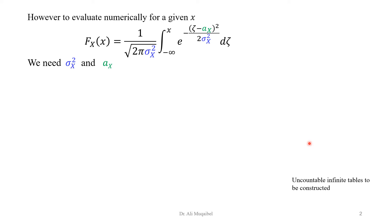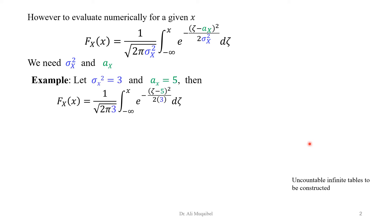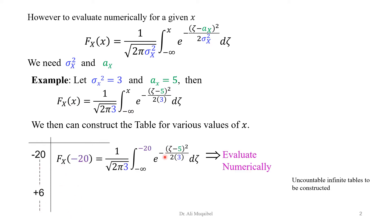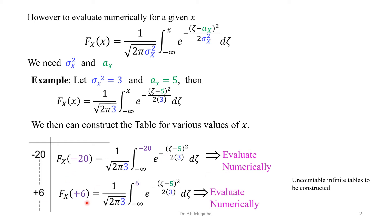To evaluate the CDF numerically for a given X, we need the variance σ_X² and the mean a_X. For example, if σ_X² = 3 and a_X = 5, we can construct a table for those specific values and try different values of X — from minus 20 and so on — until the entire table is filled. But this is not convenient because there would be an infinite number of tables as you change σ_X.